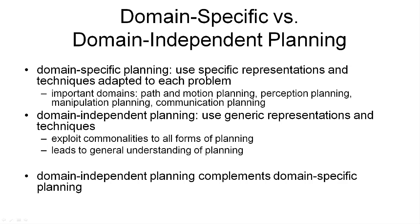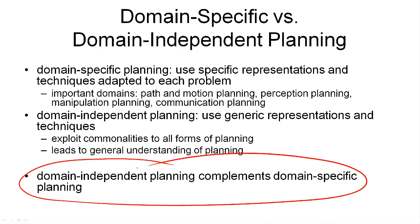On the other hand, there is domain independent planning, where we use generic representations and techniques to solve the generic planning problem. The advantage is that it saves effort — we don't need to reinvent the same techniques for different problems; we can always reuse the same planning algorithms. The disadvantage is that it means planning from first principles and is often relatively slow. But it also leads to a general understanding of planning, which serves the scientific goal of AI. Domain independent planning complements domain specific planning: domain specific is good for specific problems requiring highly efficient solutions, while domain independent is good for planning from first principles, such as situations we have never seen before. In this course, we will focus on techniques for domain independent planning.